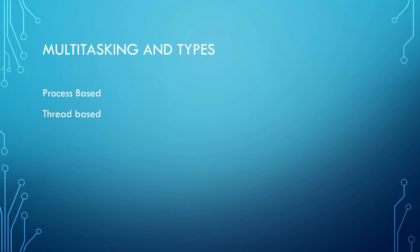What is multitasking and what are the types of multitasking? Multitasking, as the name suggests, means multiple tasks can be executed at the same time. For example, you are running a music player in the background as well as playing games at the same time. There are two types of multitasking: the first one is process-based multitasking and the second one is thread-based multitasking. Process-based multitasking is when multiple processes are running simultaneously — for example, you can play music in the background while downloading files from the internet at the same time.